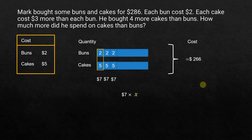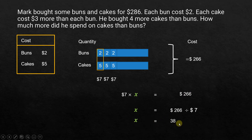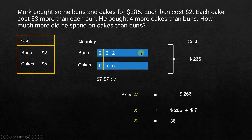Writing it as an equation: $7 times the unknown number of units equals $266. So X equals 266 divided by 7, which is 38. Remember, when you divide a dollar amount by another dollar amount, you get the quantity. So X is 38 units, meaning there are 38 buns and 38 cakes in the equal portion.